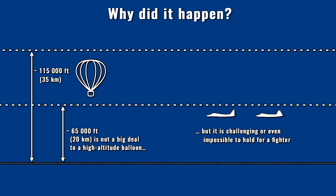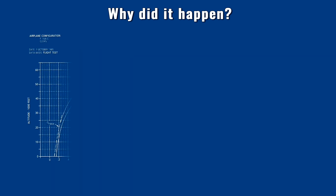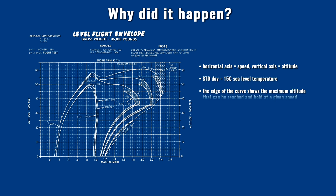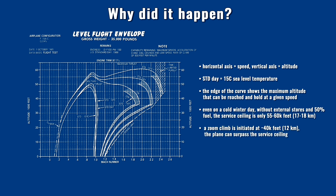This ceiling means the aircraft can still maintain a given altitude in horizontal flight, but at that point they have only minimal maneuverability — flying on the edge of stall. The diagram shows the performance of an F-15 without external stores and 50% fuel. Even at Mach 2, it can only sustain level flight at 55,000 feet. Even if it could somehow reach 60–65,000 feet, performing the fine maneuvers needed to aim the Vulcan cannon would have been impossible.